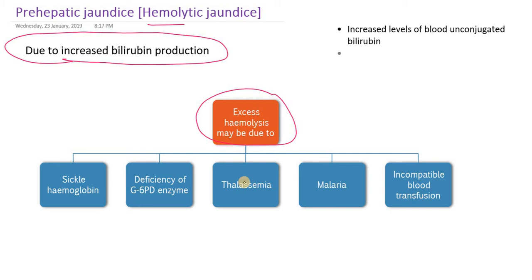The causes of prehepatic jaundice include sickle cell anemia, where the shape of the hemoglobin is sickling instead of the normal biconcave disc shape, leading to premature death of the RBC before 120 days. Other causes are malaria, thalassemia, mismatched or incompatible blood transfusion, and deficiency of the glucose-6-phosphate dehydrogenase enzyme, causing G6PD deficiency disorder. All these conditions result in enormous death of RBCs — excess hemolysis.